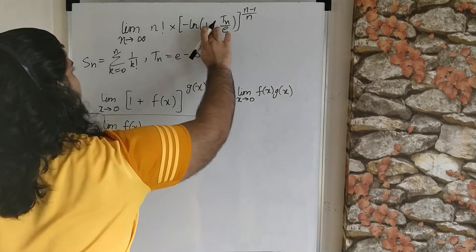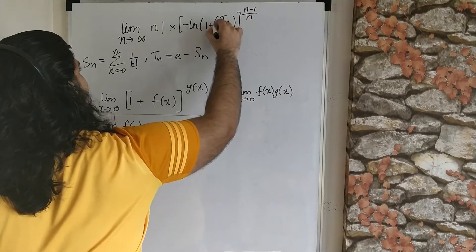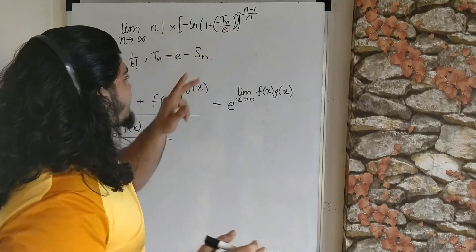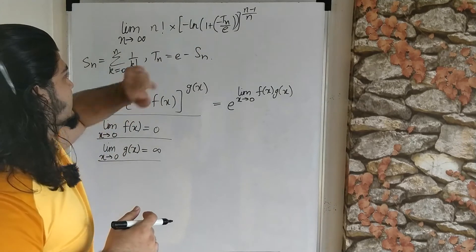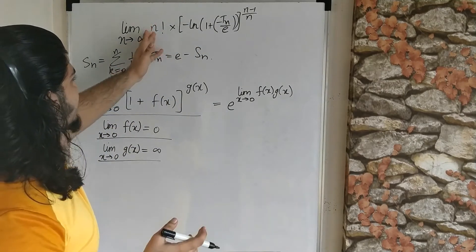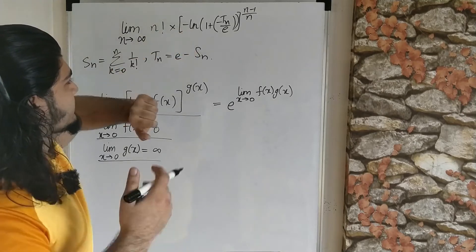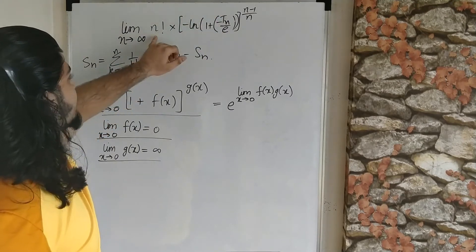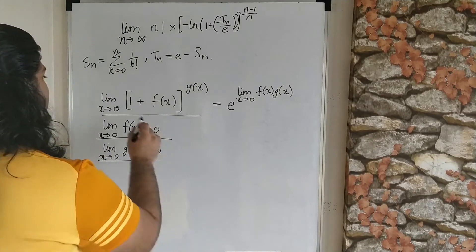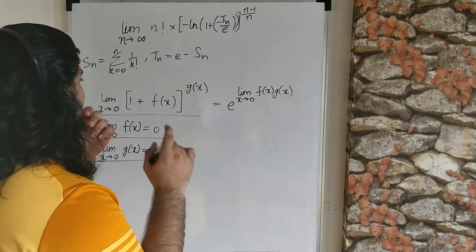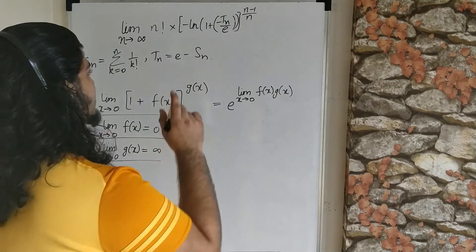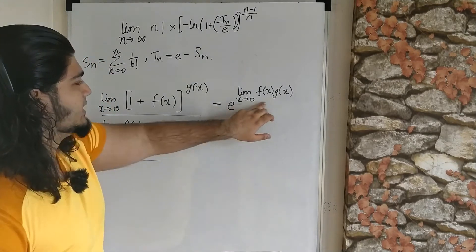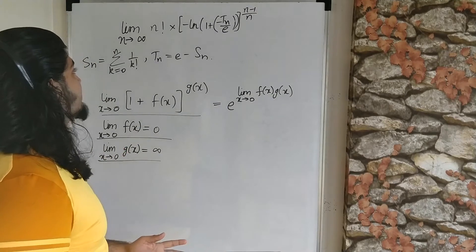Notice we can write the expression as 1 plus (−T_n over e). Since this is inside a ln, if we multiply something to a ln it goes into the exponent. We have n factorial going to infinity, so if we bring n factorial inside the bracket it goes into the exponent, giving us something of the form (1 + [something→0])^[something→∞]. We can then utilize the identity, and e to a power inside ln will cancel the ln, leaving us with just that limit.